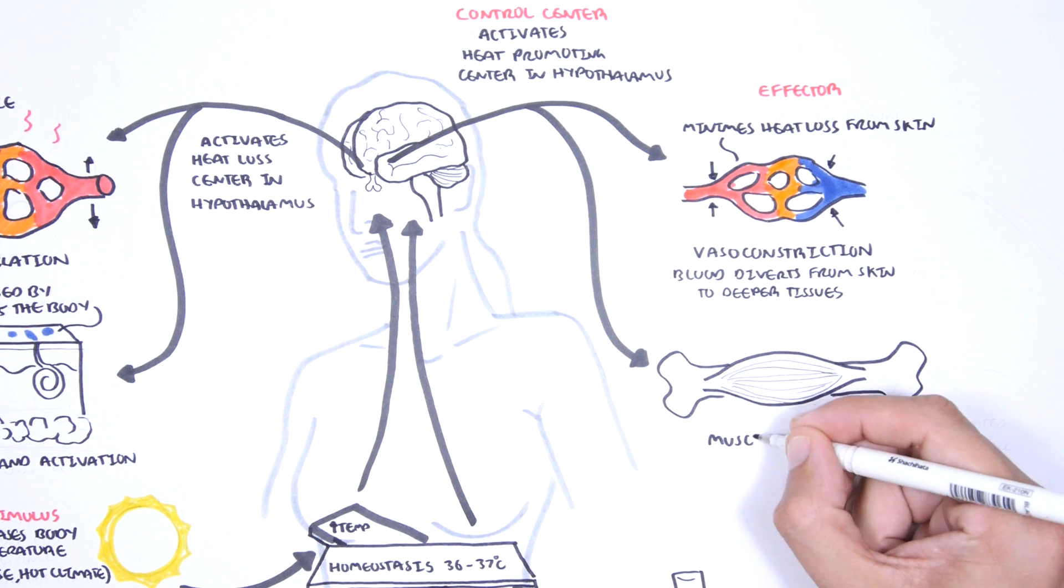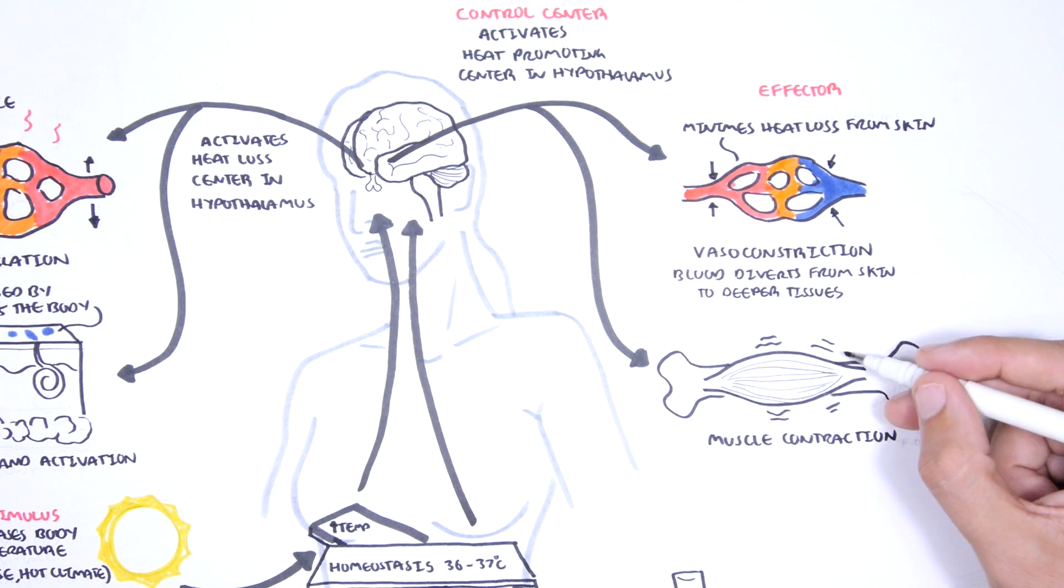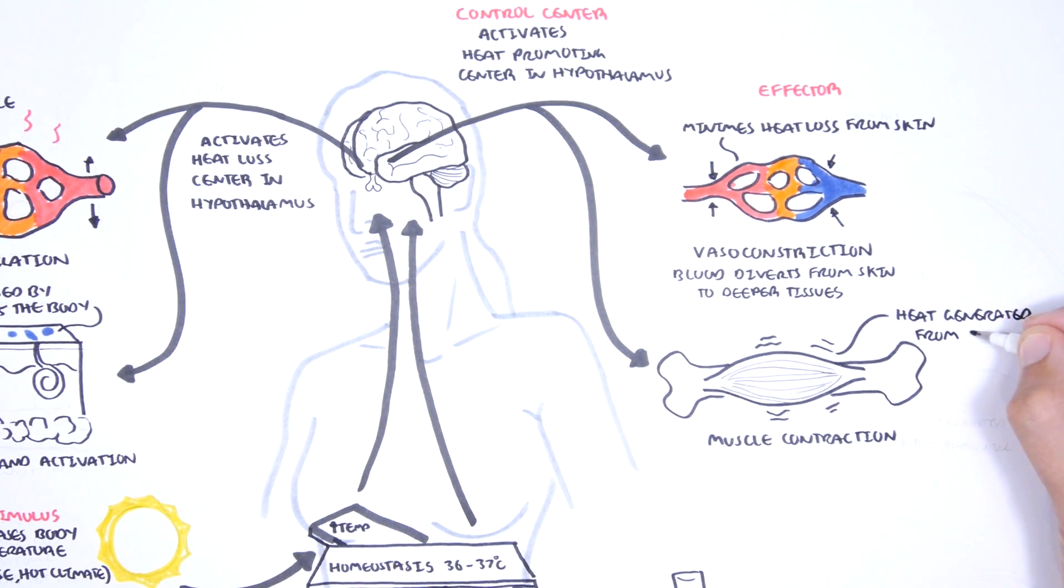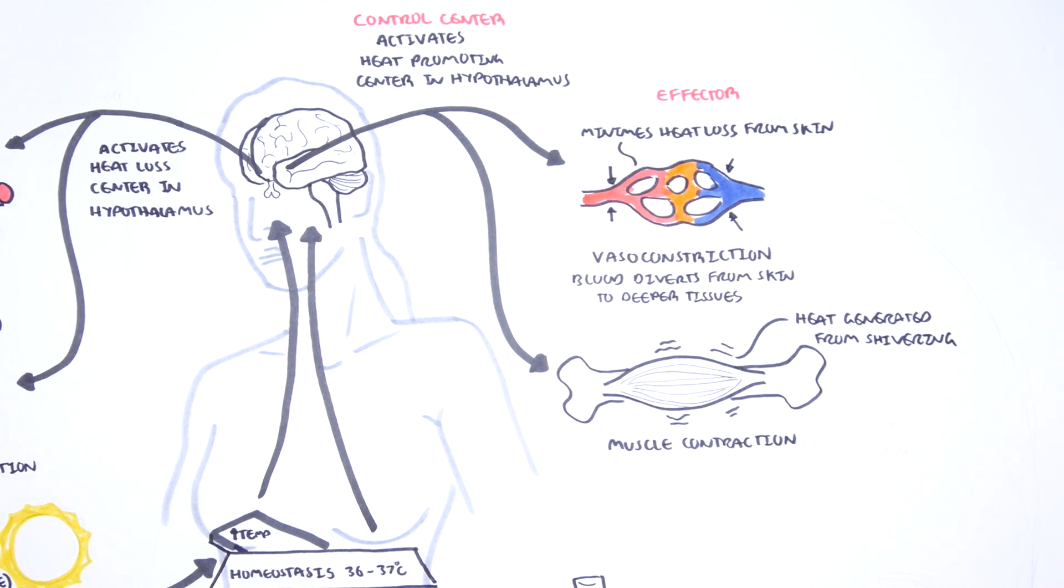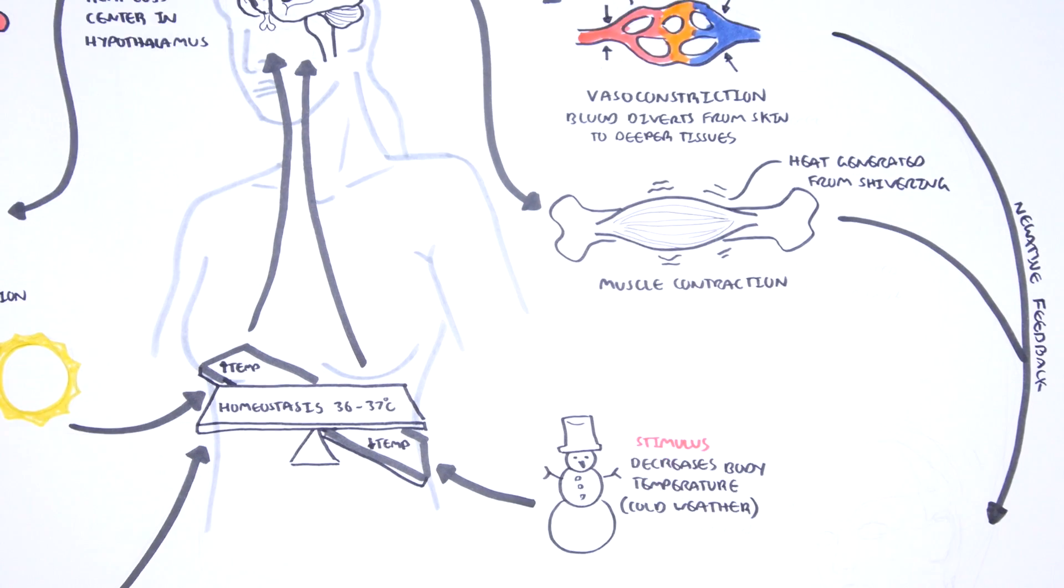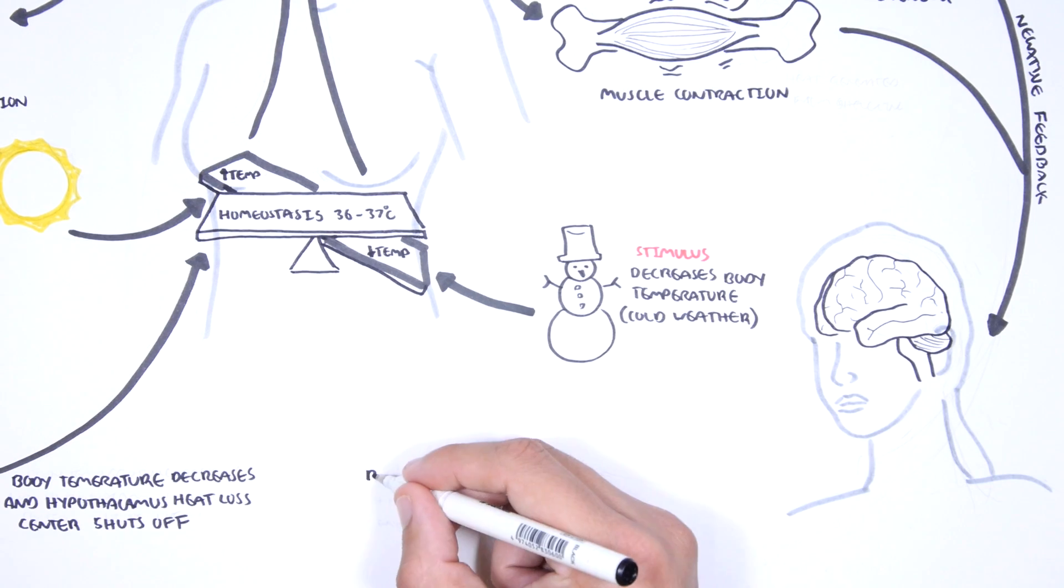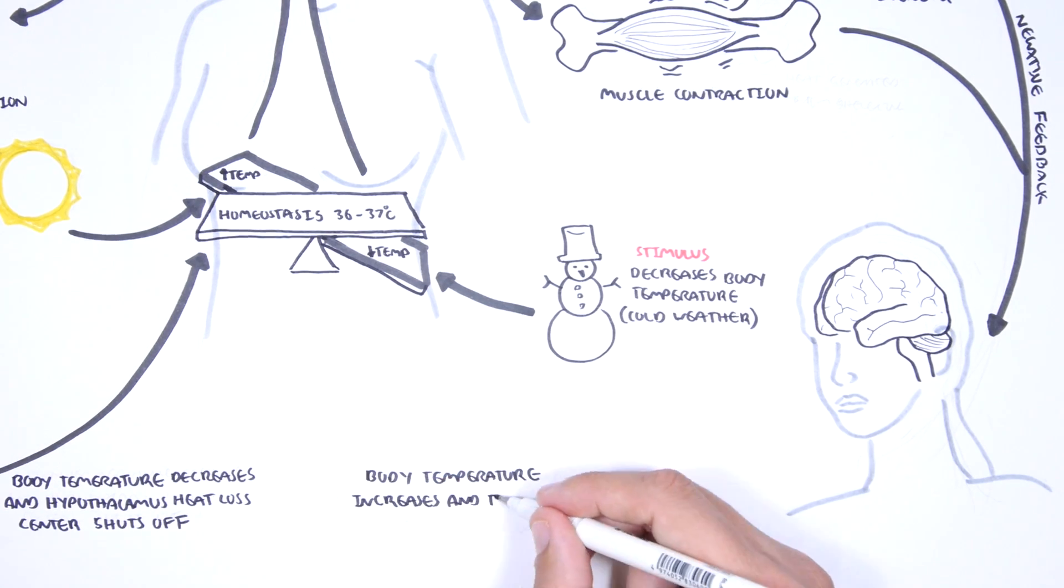If this is not enough, the brain activates shivering muscle contractions, tremors that will generate heat. These mechanisms increase body temperature, and when the body temperature is back to normal, there will be a negative feedback to the brain telling it to shut off the heat promoting centers. So body temperature will increase, and the hypothalamus heat promoting center will shut off.